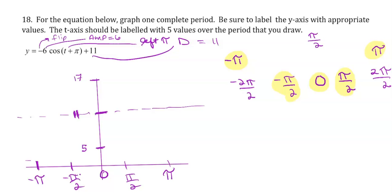I have my 5 angles. I'm now ready to sketch. I know that cosine generally starts at the highest point. But because it's negative cosine, it's going to start at the min at the first angle. Let me just change color.